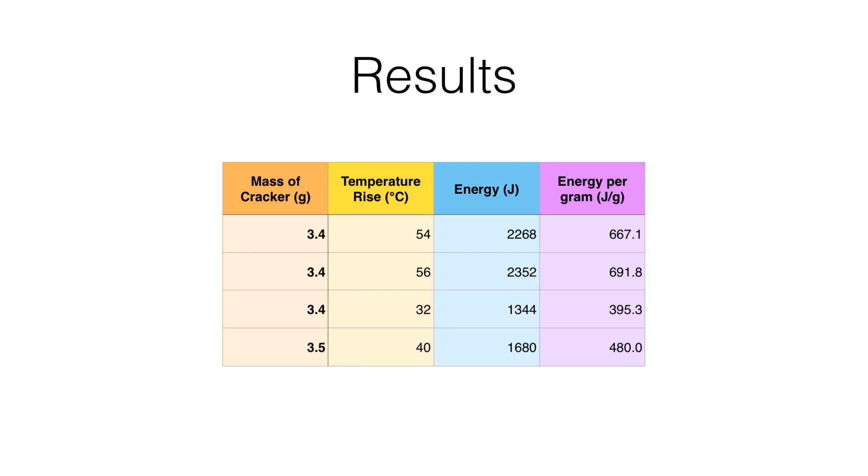Let's take a look at the results. Here we have the masses of the crackers, the temperature rise, the energy, and the energy per gram. Some crackers increased the water temperature by about 32 to 54 degrees Celsius. From there, we calculated the energy in joules, a unit of energy.